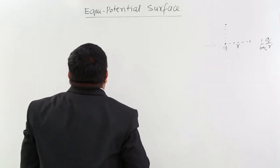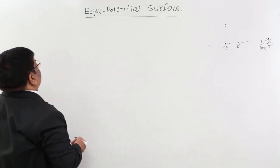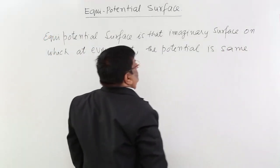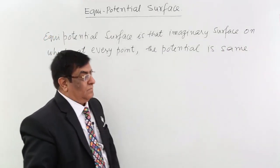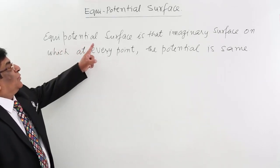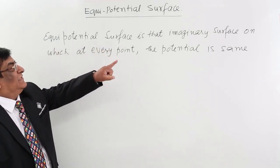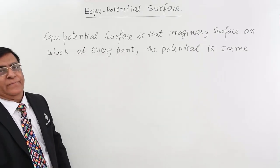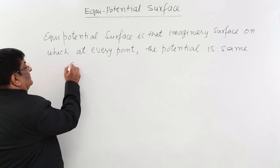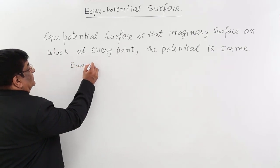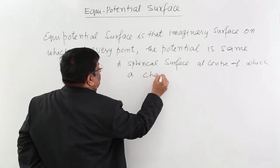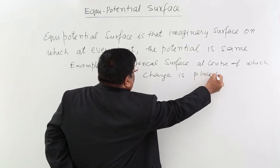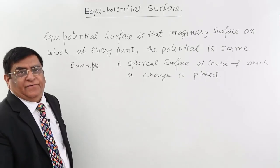So we are now in a condition to write the definition of equipotential surface. An equipotential surface is that imaginary surface on which at every point the potential is the same. The sphere around a point charge is a classic example of this.